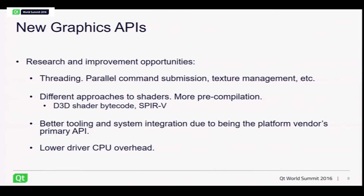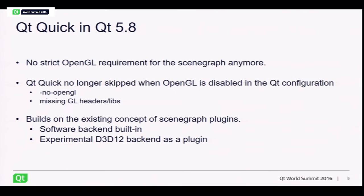Another consideration is that using these modern low-level APIs offers interesting opportunities — we could research how to improve certain things in Qt Quick like texture management, threading, and shader handling. There's a lot of room for improvements. All in all, these things led to the modularization story in Qt 5.8.